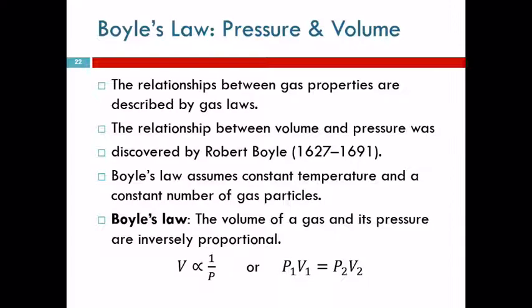Robert Boyle studied the relationship between volume and pressure. And he found that the volume of a gas and its pressure are inversely proportional, and that's called Boyle's Law. We can state it like this, where this little alpha symbol means proportional to. The volume is proportional to 1 over the pressure. That means if the pressure goes up, the volume goes down. If the volume goes up, the pressure goes down. It's opposite, inverse. We can also write it this way: the pressure at one set of conditions times the volume at that set of conditions is equal to the pressure at a second set of conditions times the volume at a second set of conditions, or P1V1 equals P2V2. And this is the form that we're going to use to solve problems.